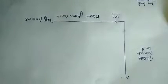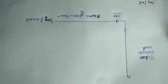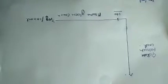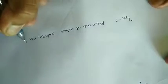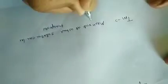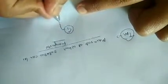Today I will be discussing transport maximum and renal threshold. Transport maximum, denoted by TM, is the maximum rate at which a substance can be transported. Let's understand this with a simple example using glucose.